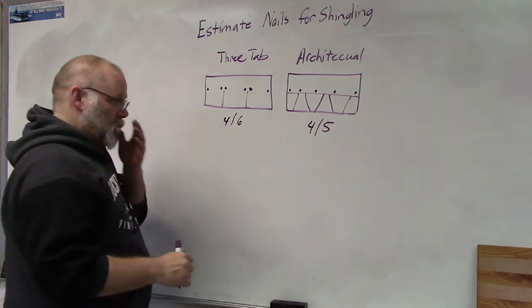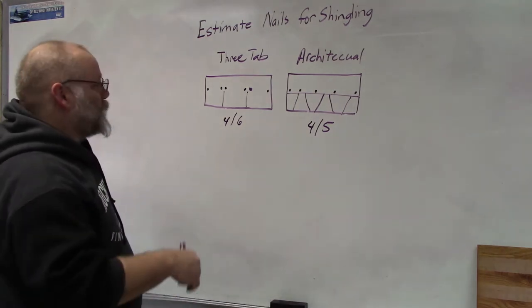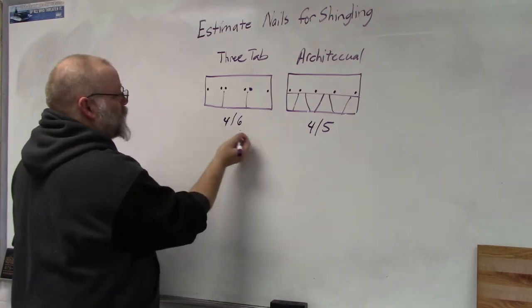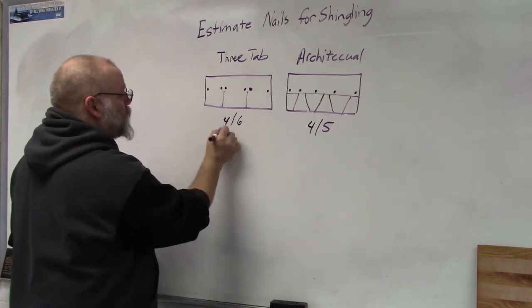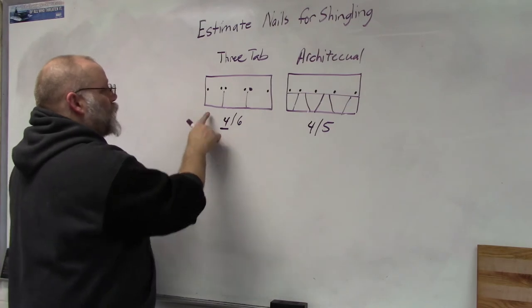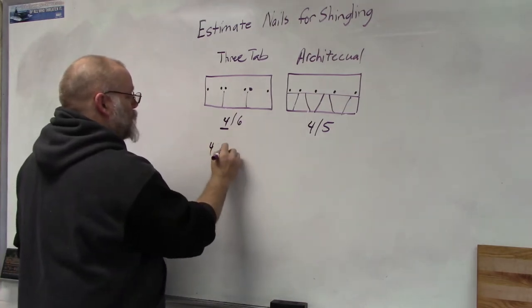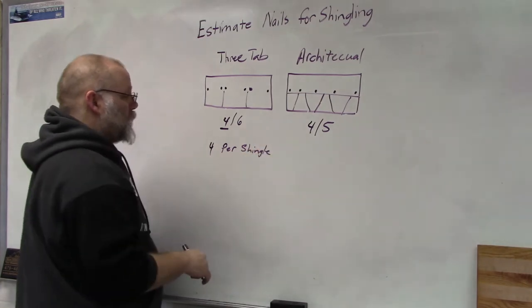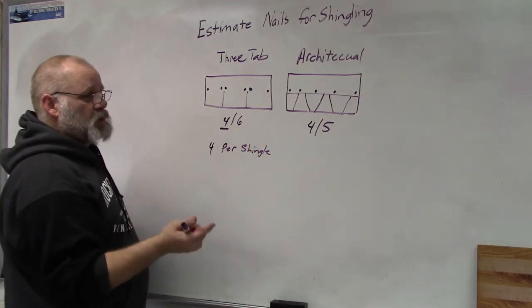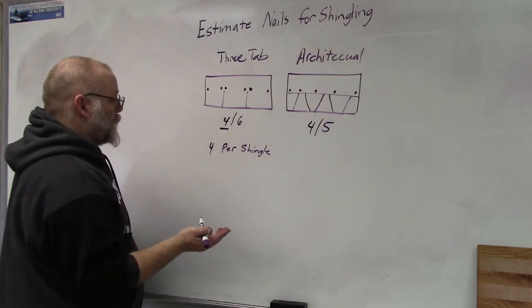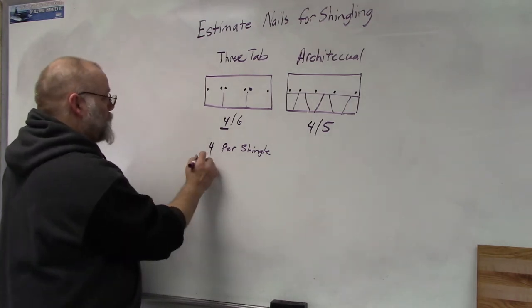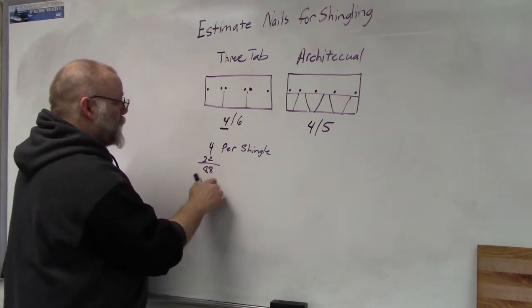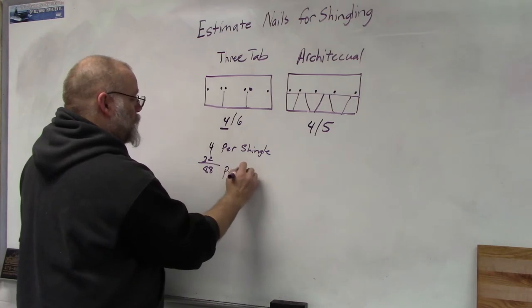Either four or six here or four or five here. So how many do we need for a job? All right, well we'll start from the bottom. How many per shingle? We know four or six, so let's choose one or the other, so let's choose four. So four per shingle. Then you would figure out how many shingles are in a bundle. So I have a bundle of shingles in my shop that has 22 shingles in it, which would be 88 nails per bundle.